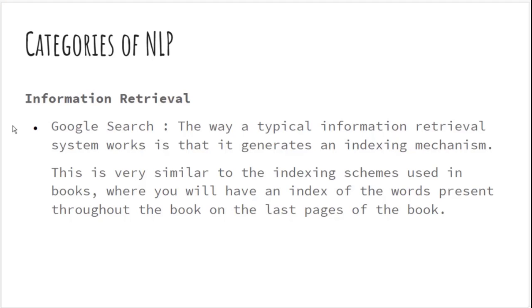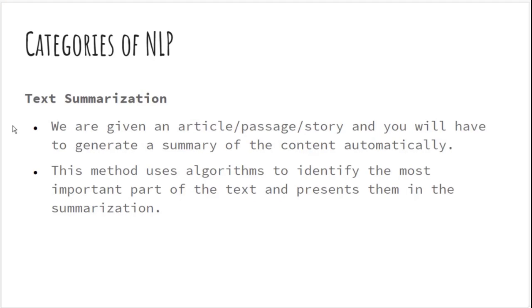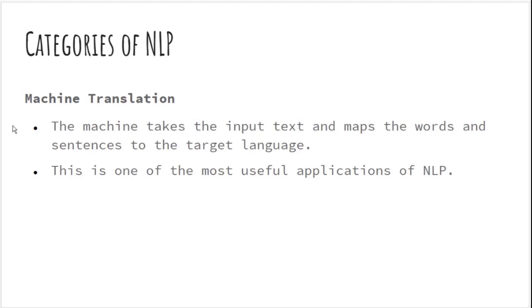Text summarization happens when we give an article or passage to an algorithm and ask for a summary of that content. This method uses algorithms to identify the most important parts of the text and present them as a summarization.